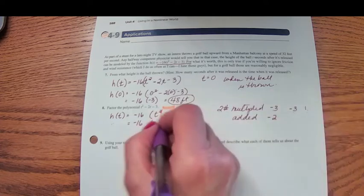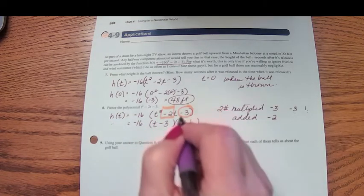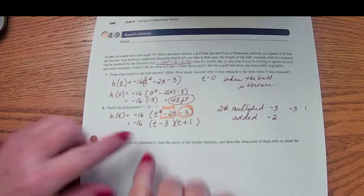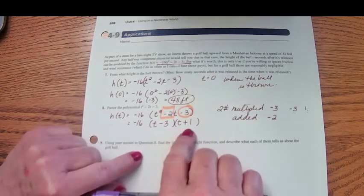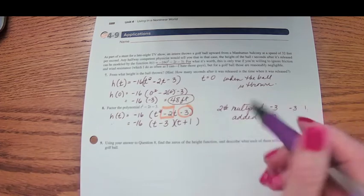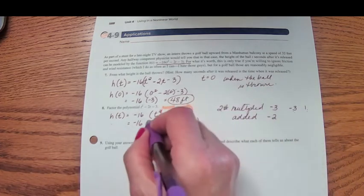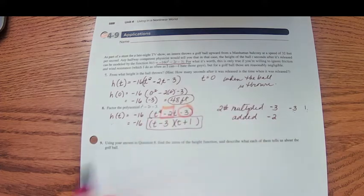So my two numbers are negative 3 and positive 1. And if we were to multiply everything here by t and then multiply everything here by negative 3, that's what we would get up here. So this is really the answer to this question—these are the factors of t squared minus 2t minus 3.